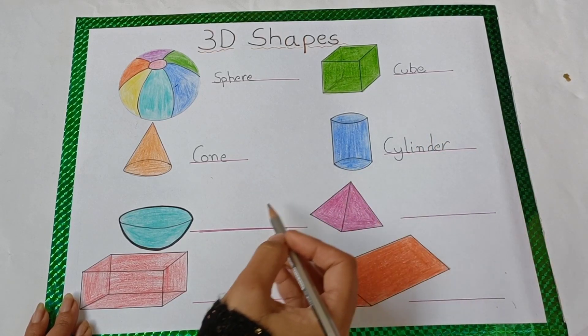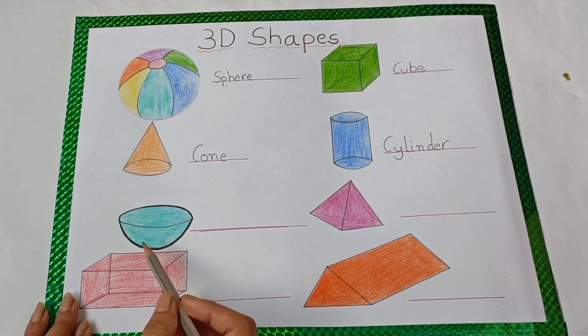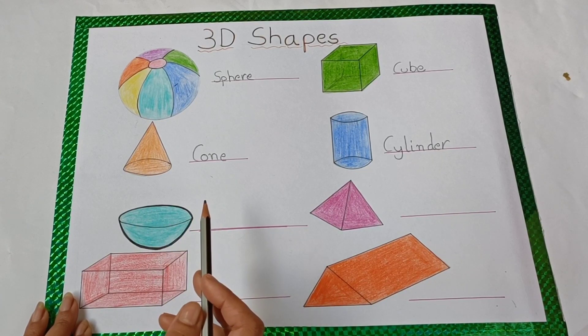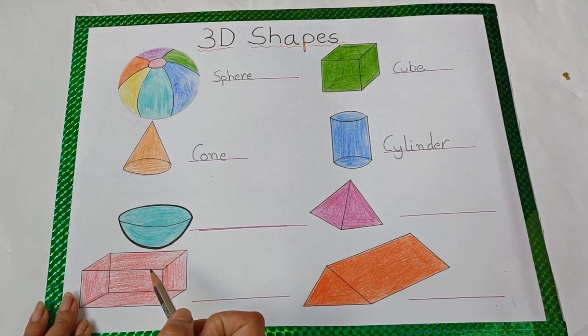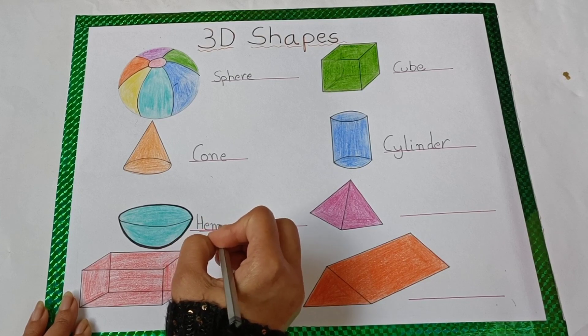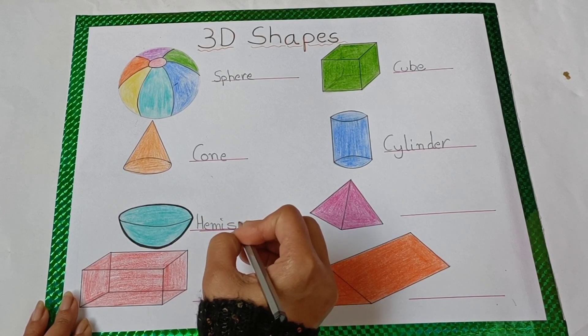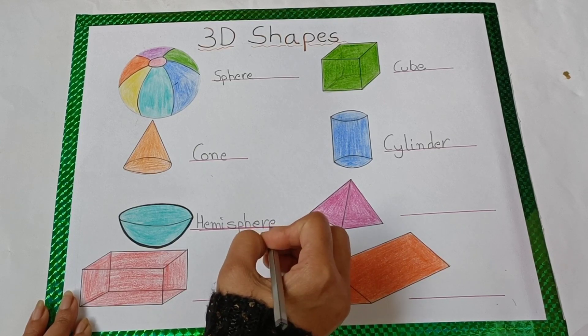Next shape is hemisphere. That is, when we cut out a sphere, it gives the hemisphere. Spelling is H-E-M-I-S-P-H-E-R-E. Hemisphere.